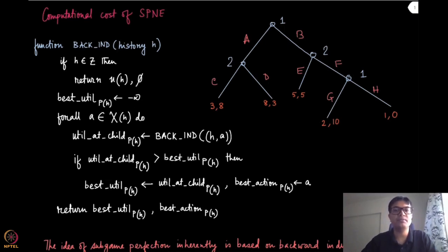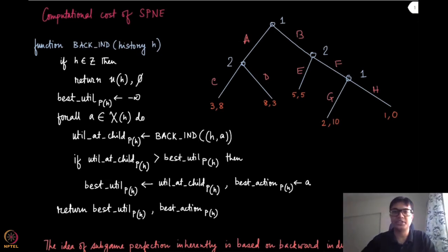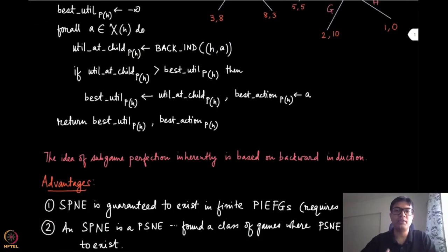This algorithm is nothing but dynamic programming and the idea of subgame perfection is essentially based on this idea of backward induction. So if you think about it carefully, you are trying to find the subgame perfect Nash equilibrium which is a Nash equilibrium at every possible subgame. So therefore, the most natural thing is this backward induction which starts from the leaf nodes and finds the equilibrium at every subgame and goes towards the root.